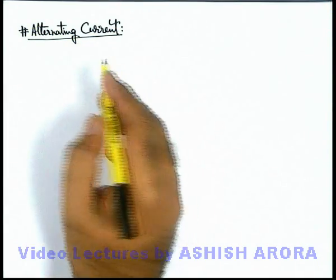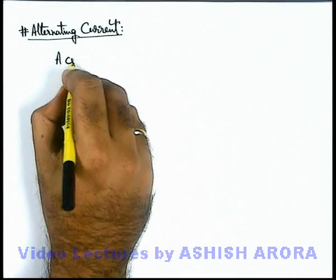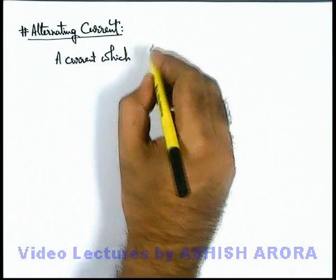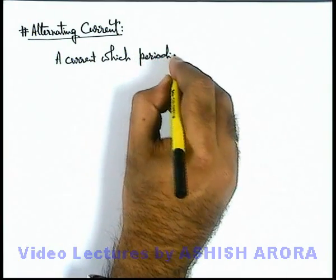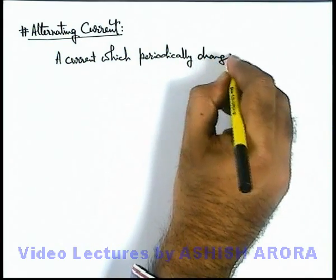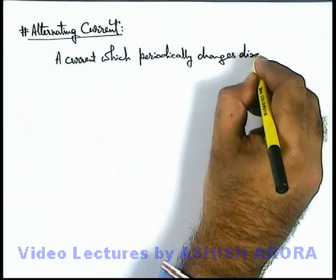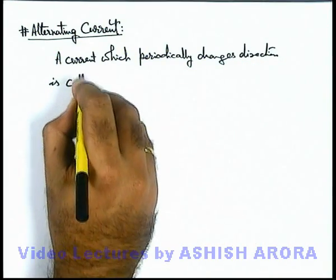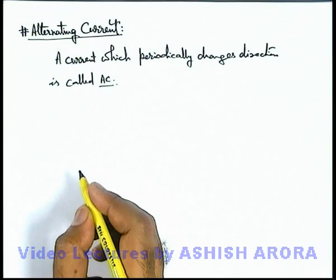The very first thing is: what is an alternating current? We can simply define it as a current which periodically changes direction. This is called an alternating current, abbreviated as AC.